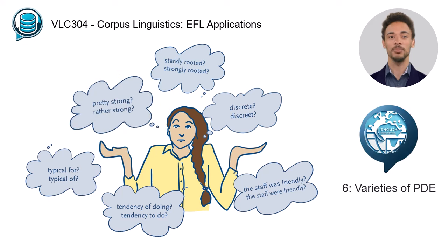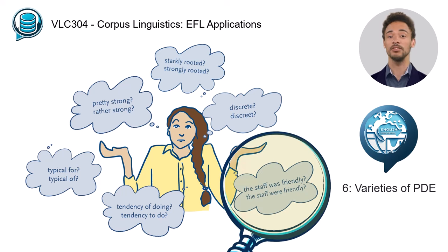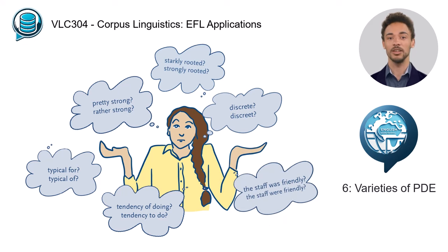School teachers might be unsure whether a pupil's use of an expression is really wrong or perhaps just a variant they are unfamiliar with. For instance, is it okay to say the staff were friendly instead of the staff was friendly? Unit 6 will provide insight into the topic of different varieties of English and how you can use corpora to solve doubtful cases.